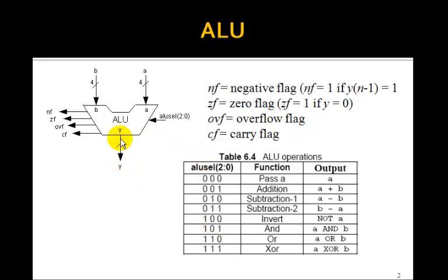So these are the eight operations for this ALU. In addition, we bring out four lines called the negative flag, the zero flag, the overflow flag, and the carry flag.